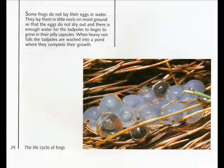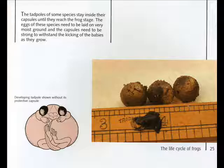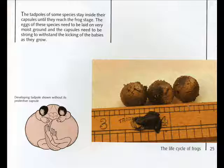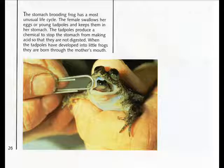Some frogs do not lay their eggs in water. They lay them in little nests on moist ground so that the eggs do not dry out and there is enough water for the tadpoles to begin to grow in their jelly capsules. When heavy rain falls, the tadpoles are washed into a pond where they complete their growth. The tadpoles of some species stay inside their capsules until they reach the frog stage. The stomach brooding frog has a most unusual life cycle: the female swallows her eggs or young tadpoles and keeps them in her stomach. The tadpoles produce a chemical to stop the stomach from making acid so that they are not digested. When the tadpoles have developed into little frogs, they are born through the mother's mouth.